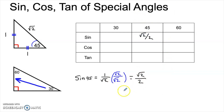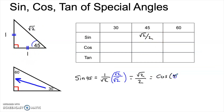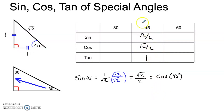The cosine of 45 is going to be the same thing because cosine is adjacent over hypotenuse, and the adjacent side is also 1 in this triangle — so cosine of 45 is also the square root of 2 over 2. Tangent is opposite over adjacent, so that's 1 over 1, which is of course just 1. And there are the values for sine, cosine, and tangent of 45 degrees.